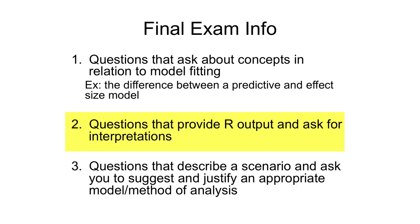Another example could be an interaction term in our output. Let's say we're interested in the effect of education on contraceptive use and whether this varies by ethnicity. There could be output from a regression model including an interaction term between education and ethnicity, and you would be expected to know how to calculate strata-specific odds ratios based on this.